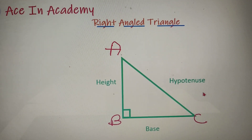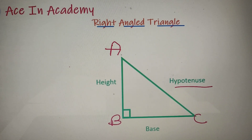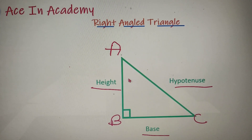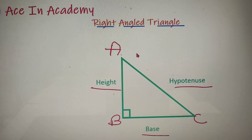The longest side of a right-angled triangle is called the hypotenuse. The side opposite to the hypotenuse is called the height or the perpendicular, and the third side is called the base. The naming of a right-angled triangle is very important because it is directly related to trigonometry and heights and distances, which are a major part in most exams.